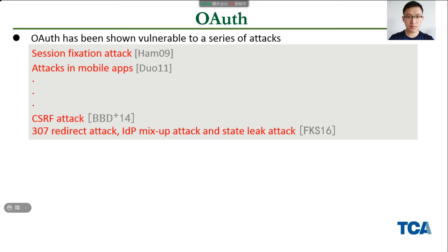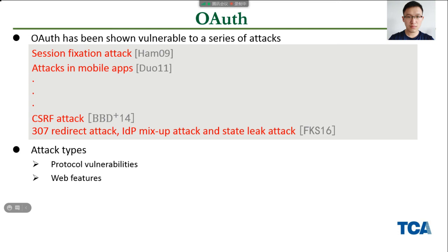Known attacks include CSRF attacks and the new four attacks disclosed in FKS 2016. These attacks mainly stem from protocol vulnerabilities as well as the various web features of OAuth. For the security analysis of OAuth, finding attacks and proving security goals are two main purposes.